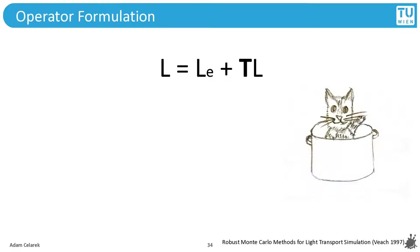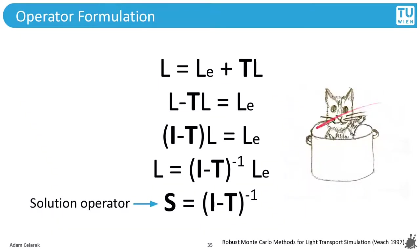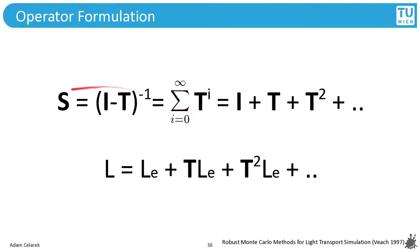Since these operators are linear, we can reformulate the equation into a solution operator. It turns out the solution operator — the inversion — is an infinite sum of the identity, plus the transport operator, the transport operator squared, etc. When we apply the solution operator, we get the solution: the light distribution in the scene is the emitted light, plus this light scattered once, plus this light scattered twice, thrice, and so on to infinity.